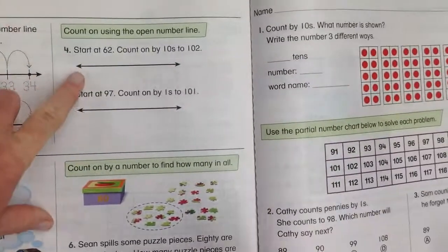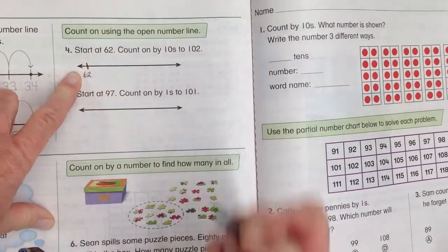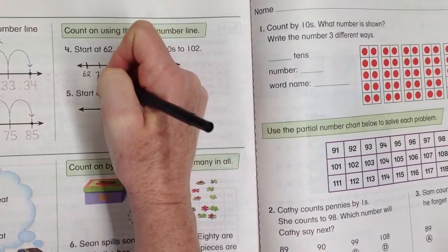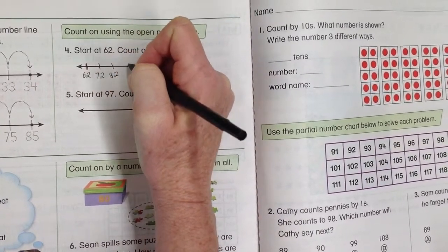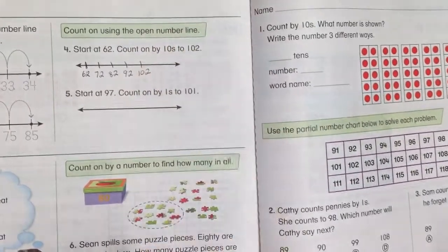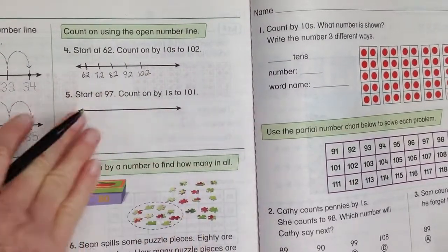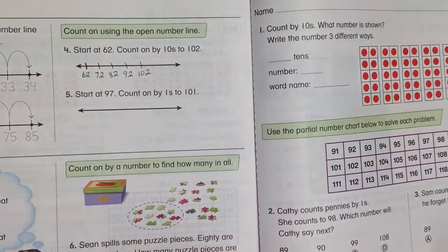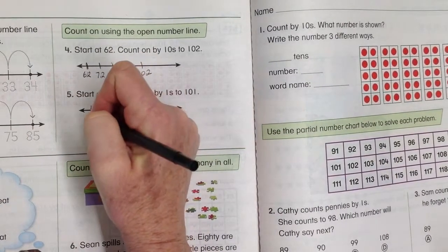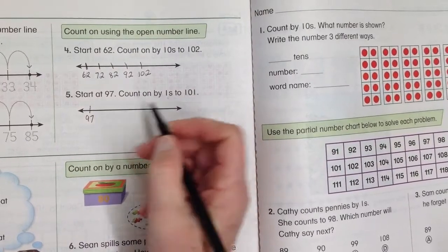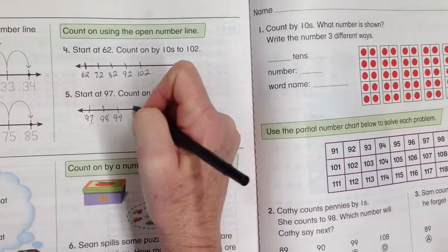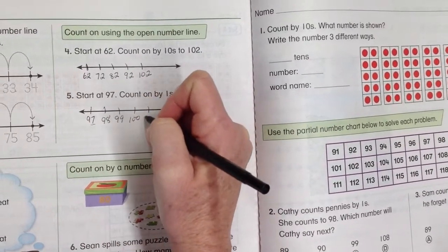So here it says start at 62, count by tens to 102. So 62, the next one would be 72, 82, 92, 102. It's just a different way, instead of writing with the spaces and the commas in between. This one says start at 97, count on by ones. So we're going to change the ones: 97, 98, 99, 100, 101.